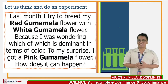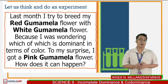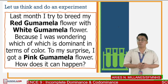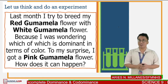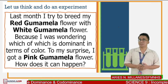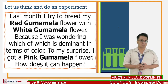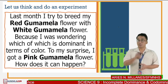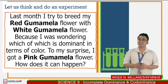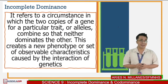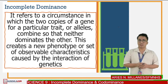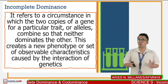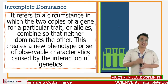Now try to analyze this problem. I tried to breed my red gumamela flower with a white gumamela flower because I was wondering which color is dominant. To my surprise, I got a pink gumamela flower. Is it really possible — red and white turning into pink? Well, in genetics, it is still possible. This is called incomplete dominance. In this type of non-Mendelian inheritance, there is no true dominant trait — in layman's terms, they are co-equal. Therefore, the traits are mixed to form another new trait.